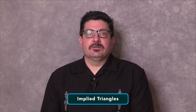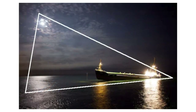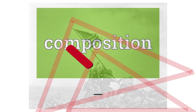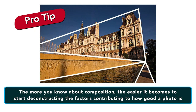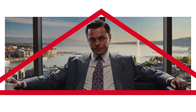There are also implied triangles. One of the most common types of triangles you'll come across is the implied triangle. As you rarely see physical triangles in photography or in cinematography, the shape is almost always implied and it's usually done so without the viewer even noticing. The more you know about composition, the easier it becomes to start deconstructing the factors contributing towards how good a photo or scene is.